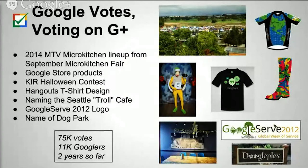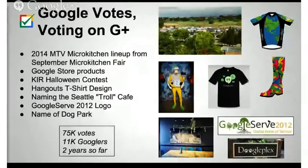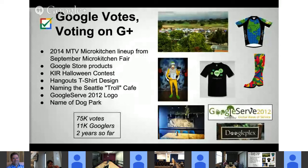Basically all the vendors show up and pitch their stuff. Other things we've voted on include, for example here at Kirkland, the Halloween costume, the Hangouts t-shirt, and the name of the Troll Cafe in Seattle. We've also done some products at the Google store. This is why I'm wearing these very spiffy, colorful boots — they won over the rain jacket and several other options.